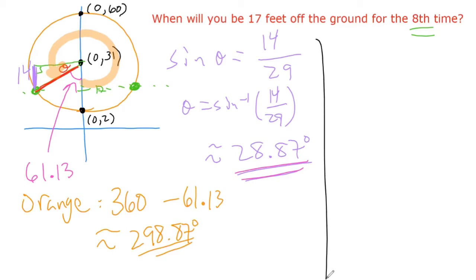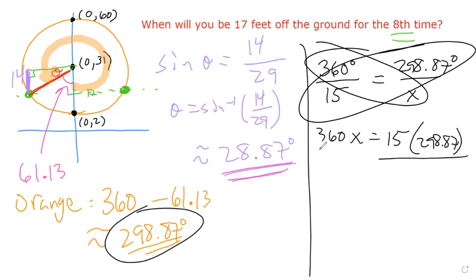And so now we can set up a proportion. We know that 360 degrees goes with 15 seconds and we know that our angle is 298.87 degrees. That is with an unknown time. Cross multiply and then divide both sides by 360. That's about 12.45 seconds.